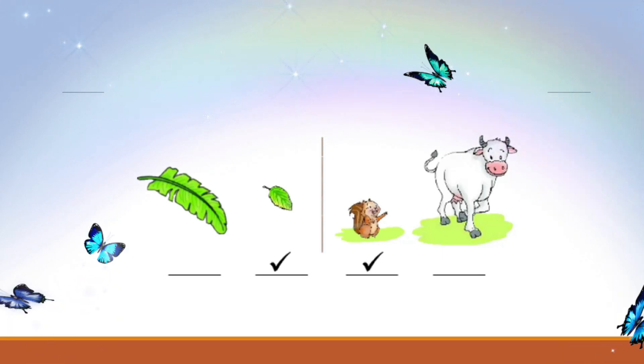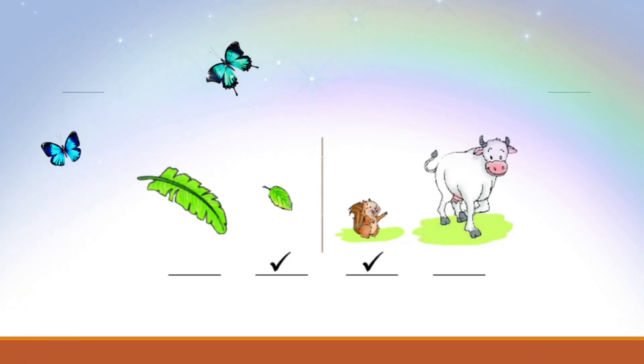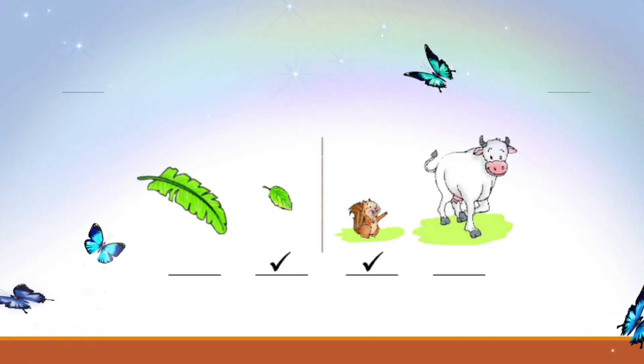That's right! The apple leaf is smaller than the banana leaf. It's a tiny little leaf, and this big animal is a cow. Cows are much larger compared to squirrels. They are gentle and give us milk.